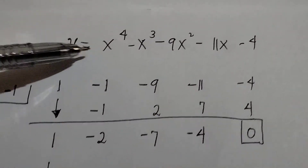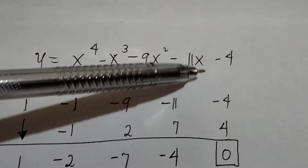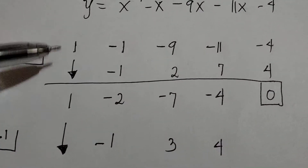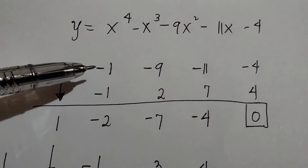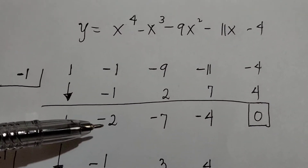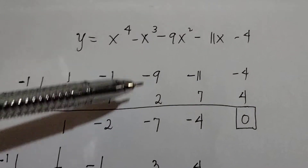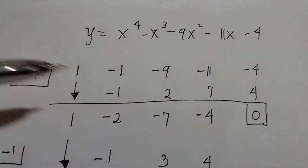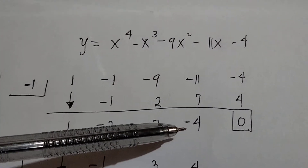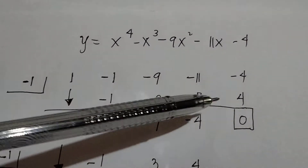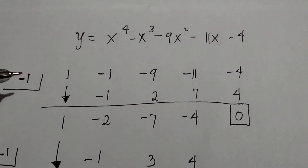Now take all the coefficients: 1, negative 1, negative 9, negative 11, negative 4. Bring down 1. 1 times negative 1 is negative 1. Negative 1 plus negative 1 is negative 2. Negative 2 times negative 1 is 2. Negative 9 plus 2 is negative 7. Negative 7 times negative 1 is 7. Negative 11 plus 7 is negative 4. Negative 4 times negative 1 is 4. Negative 4 plus 4 is 0 — that means negative 1 is one of the rational roots.